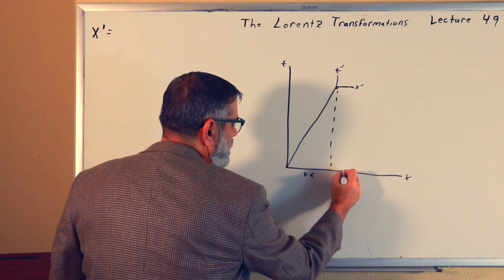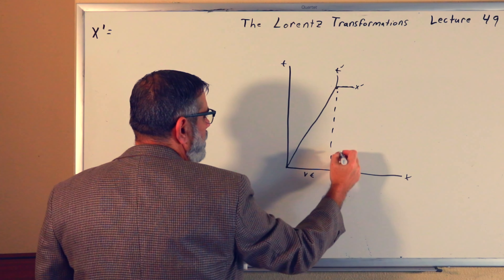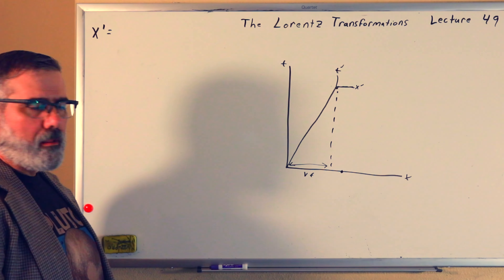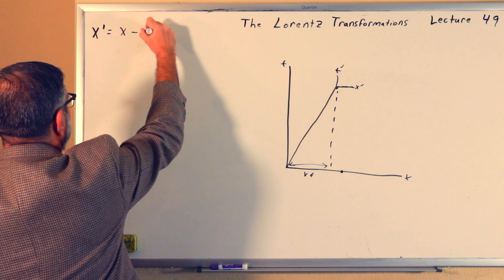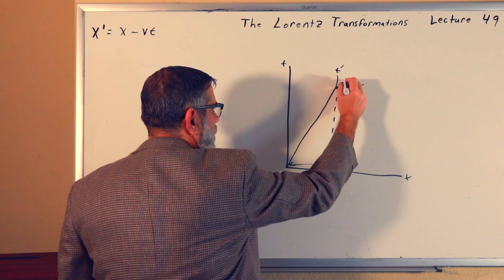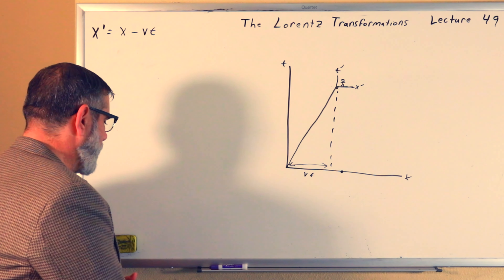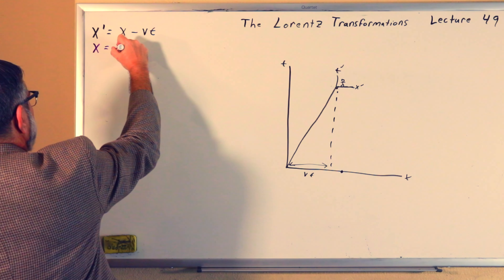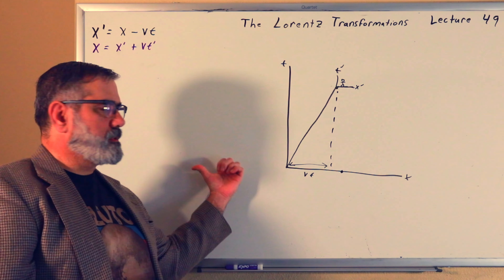If we have the value of x in the platform frame, we can get the value of x prime in the moving frame by simply taking this number and subtracting off this distance vt. So we'd say the position in the moving frame, x prime, is equal to x minus vt. And we could work it out the other way. If we're in the moving frame, we'd see the platform moving in the opposite direction, giving the inverse Galilean transform: x equals x prime plus vt prime. The plus sign is because the velocity is in the opposite direction — the guy on the platform sees the train moving to the right, while the guy on the train sees the platform moving to the left.